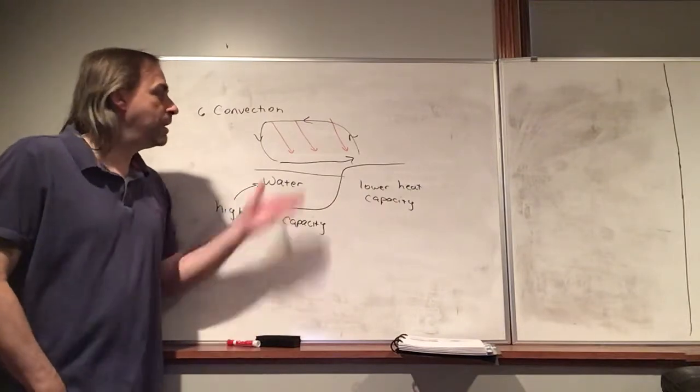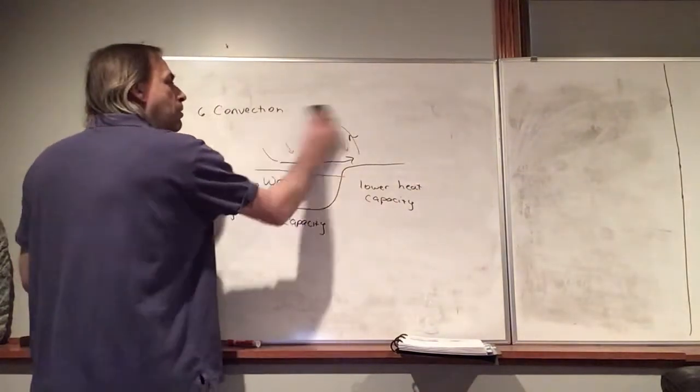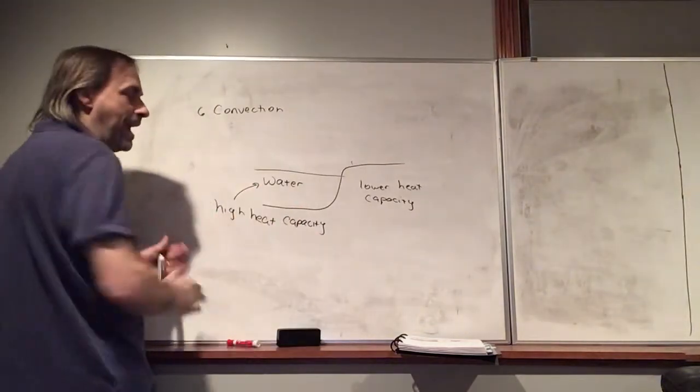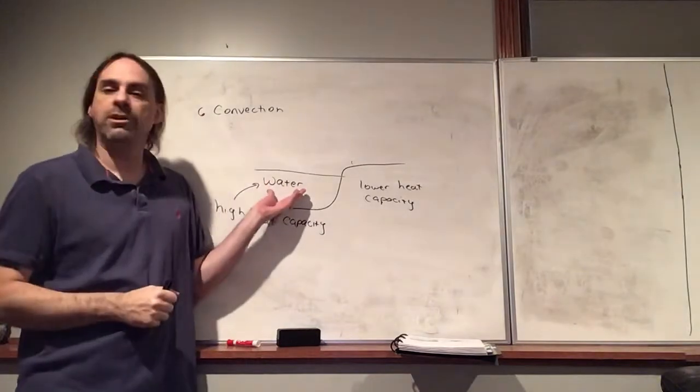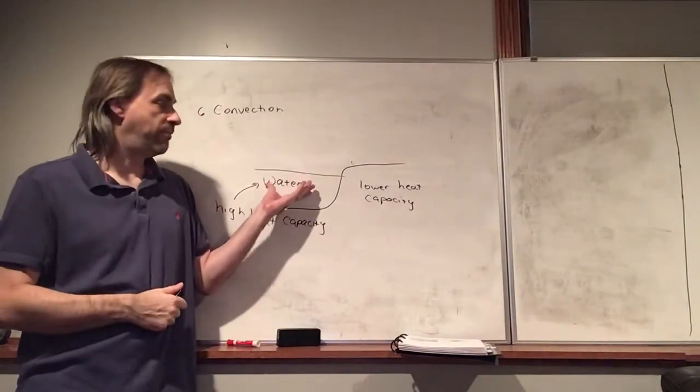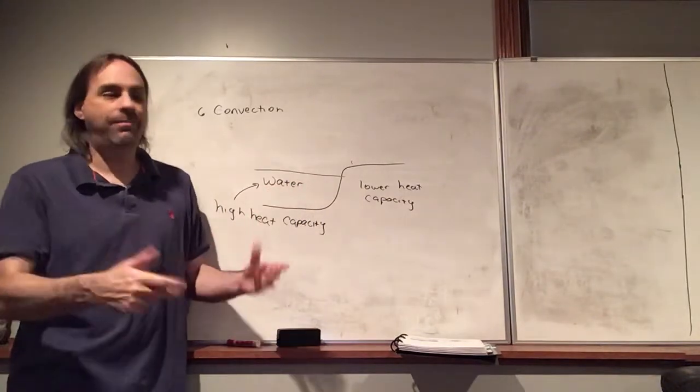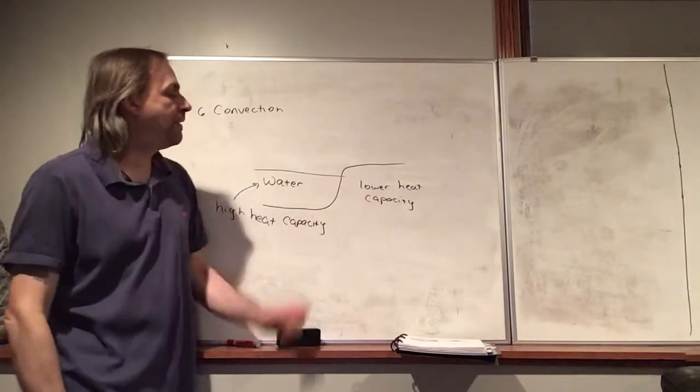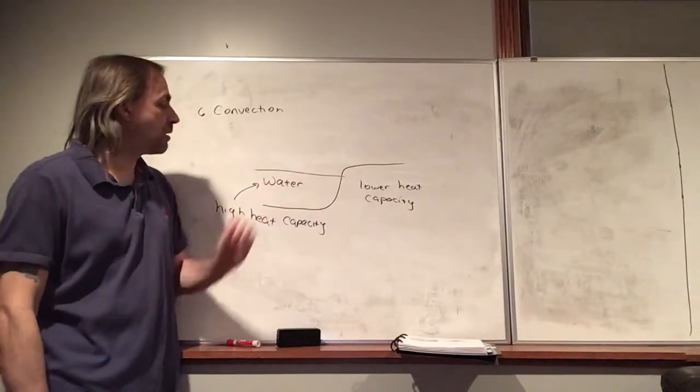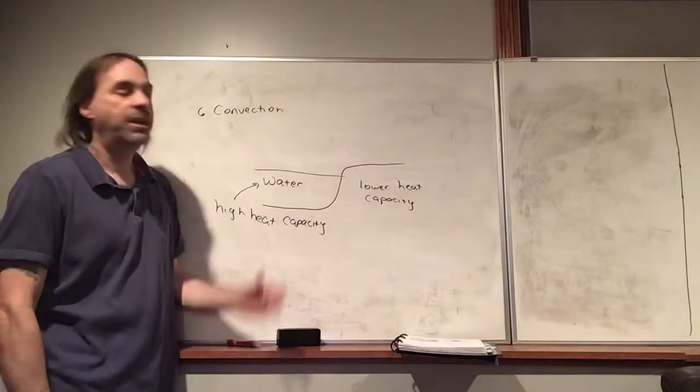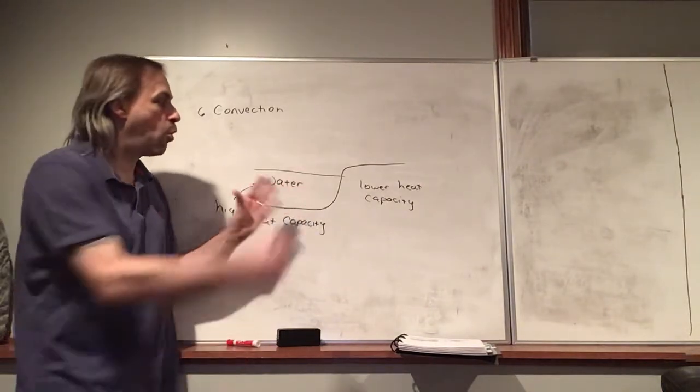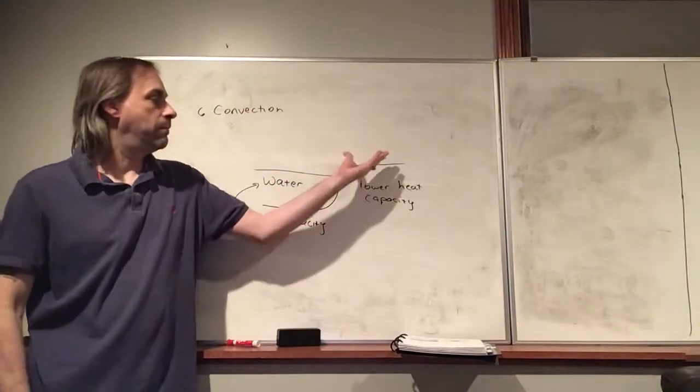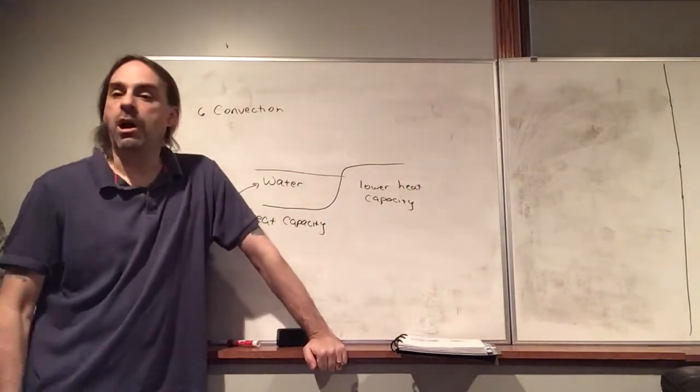And then, at night time, the sunlight is gone. And so, things start cooling off. And, again, same reason. The high heat capacity, the water is going to remain warmer for much longer. Because it takes a lot of energy. The heat capacity works both ways. The temperature change is going to be very slow. Because water has a high heat capacity. So, at night, the water is going to remain somewhat warmer. And it's going to be giving off heat. Which will keep the area on the shore from cooling off too much.